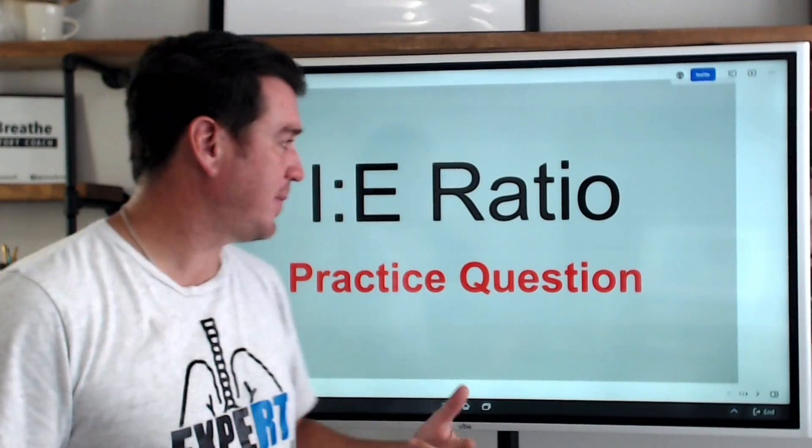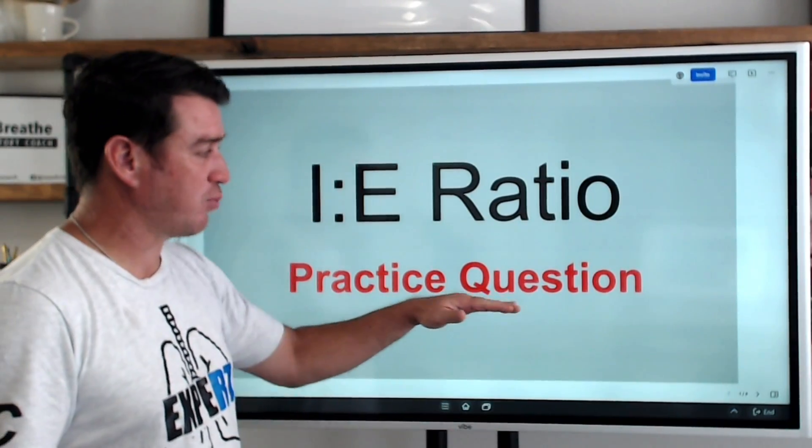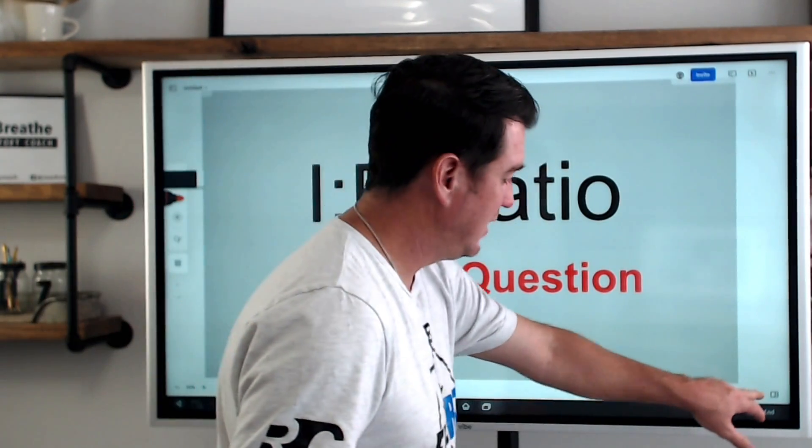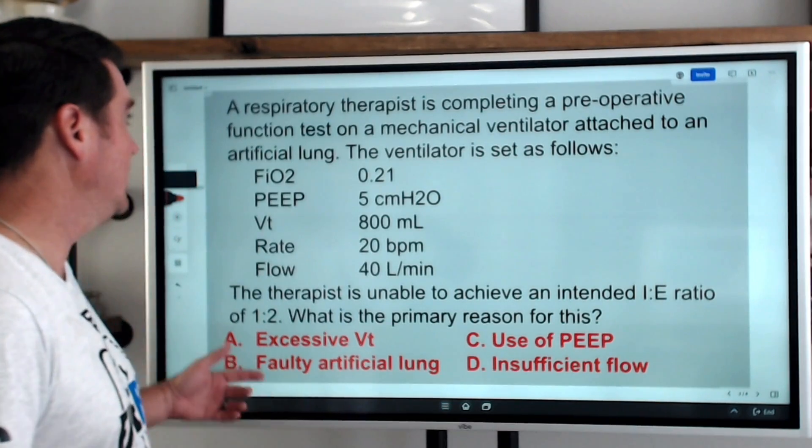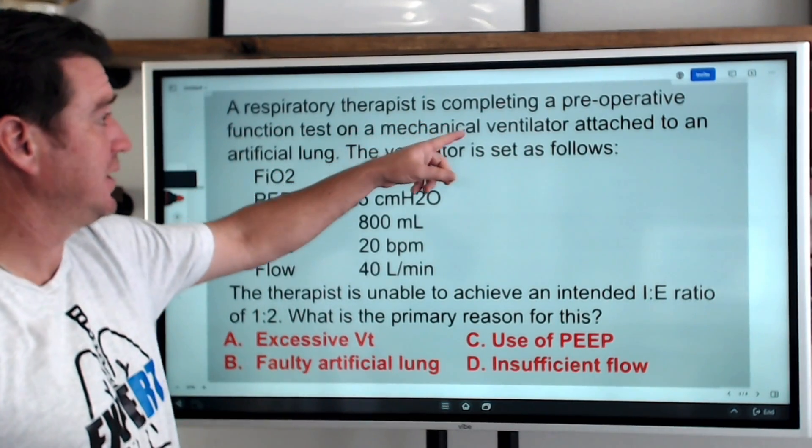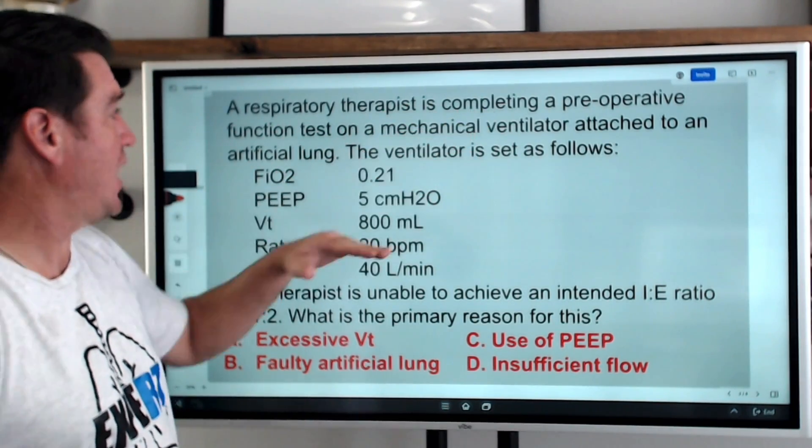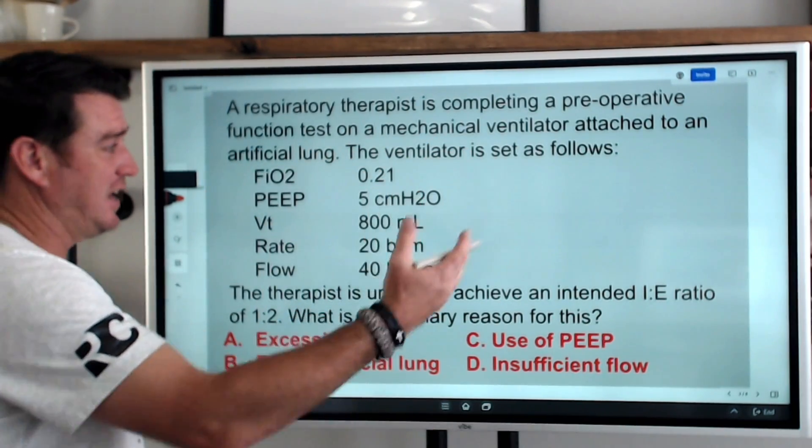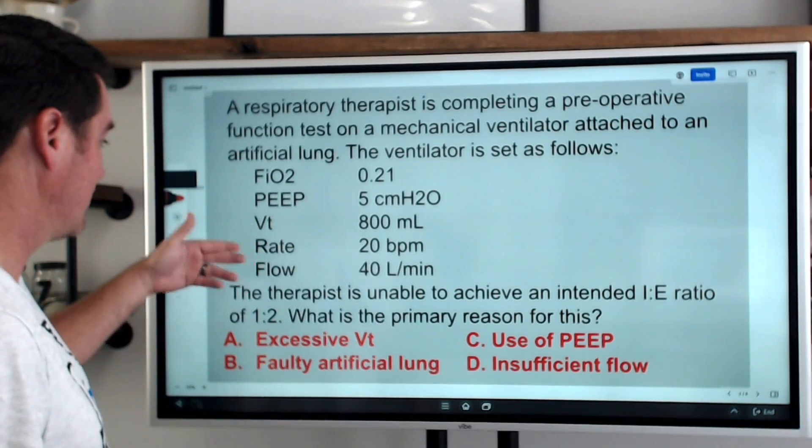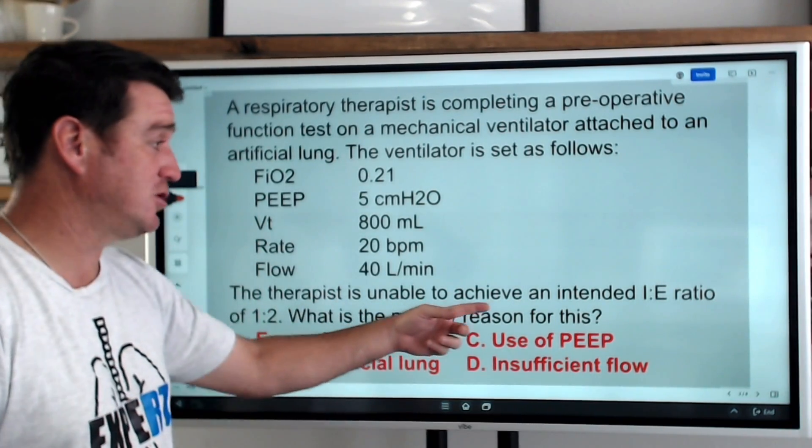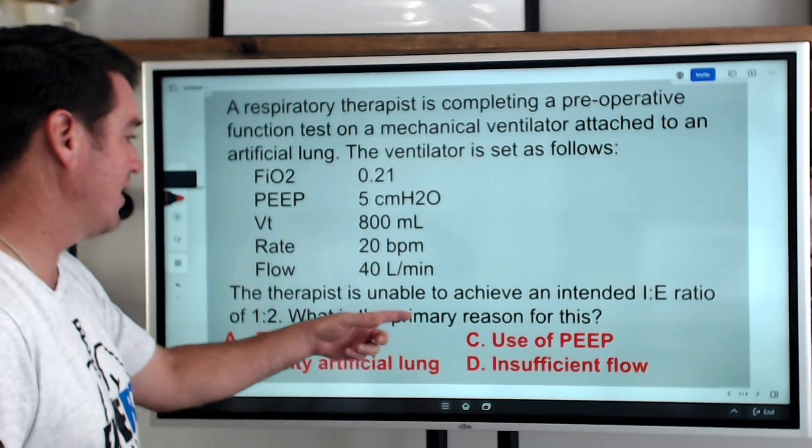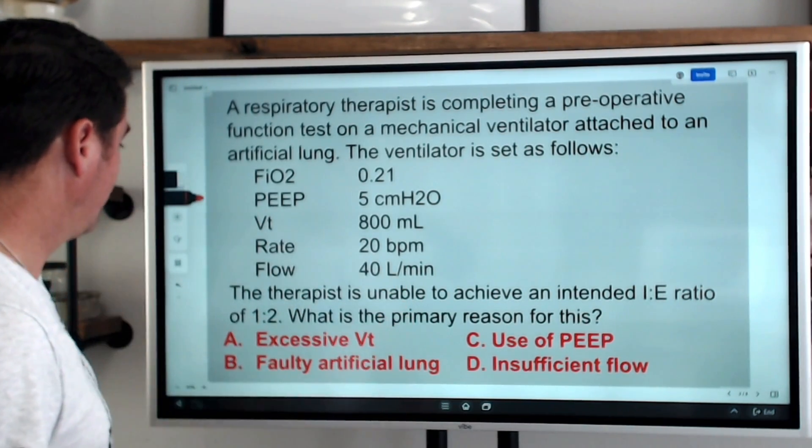Alright, so let's jump in and talk about this question. Remember we're going to be breaking down a practice question but it's really all going to revolve around I to E ratio. Let's look at the question here. The question is a respiratory therapist is completing a preoperative function test on a mechanical ventilator attached to an artificial lung. The ventilator is set as follows. You've got settings here.